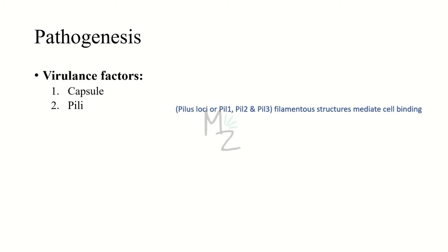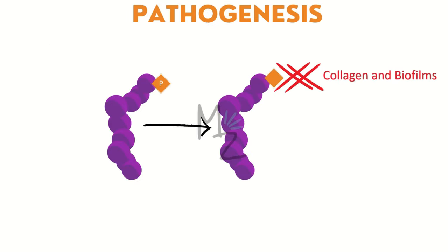In case of strep gallolyticus, these are pilus loci or pil 1, pil 2, pil 3. These are filamentous structures that mediate cell binding. Okay, let me explain that to you.